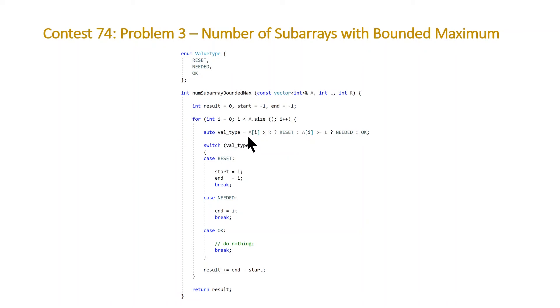At the top, we're going to set the type of our current element. If it's greater than our upper bound r, we're going to set it as a reset value. If that fails, then we're going to check if it's greater than or equal to l, in which case it will be a needed value. Otherwise, it's an okay value.